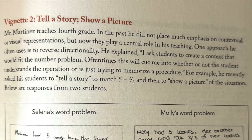On page 133, they write: 'In the past, he did not place much emphasis on contextual or visual representations, but now they play a central role in his teaching. One approach he often uses is to reverse directionality.' He explained: 'I ask students to create a context that would fit the number problem. Oftentimes, this will cue me into whether or not the student understands the operation or is just trying to memorize a procedure.' For example, he recently asked his students to tell a story to match five minus two thirds and then to show a picture of the situation.